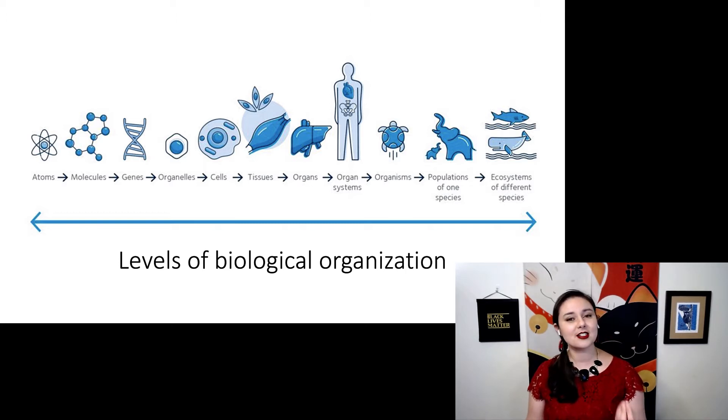You have a bunch of cells together of the same type, you get a tissue. Put a couple tissues together, you get an organ. You put all of the organs together in a particular system, and you get an organ system. And you put all of the organ systems together in an individual, and now you have an organism.